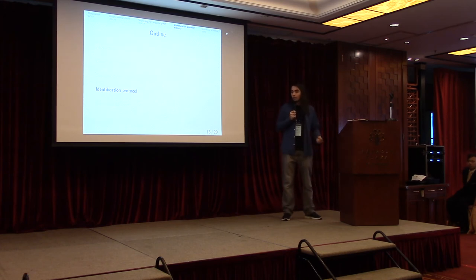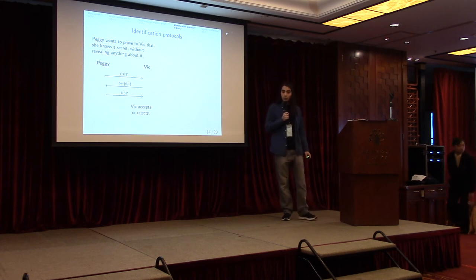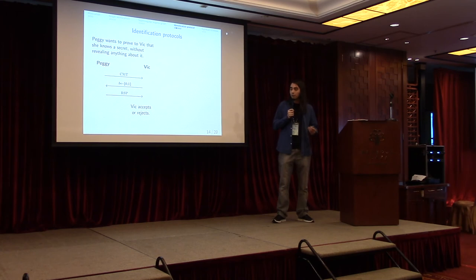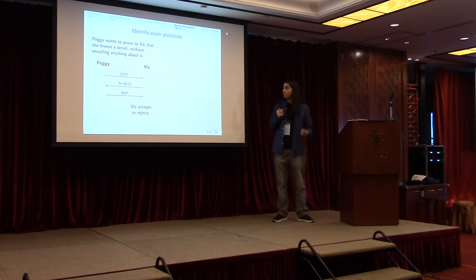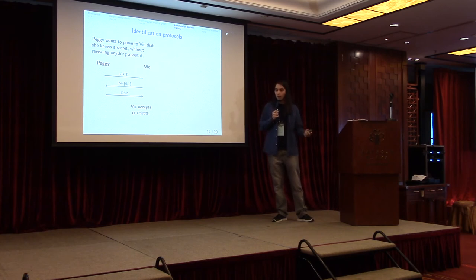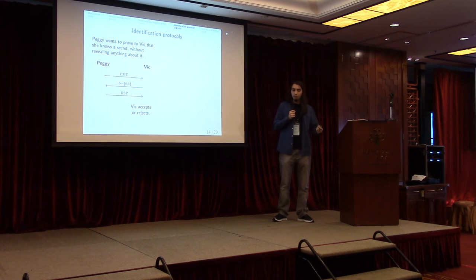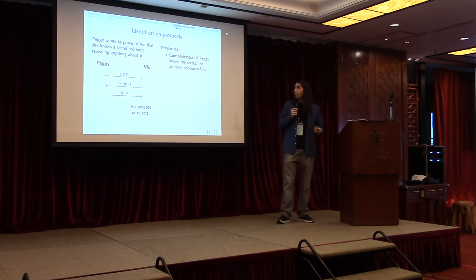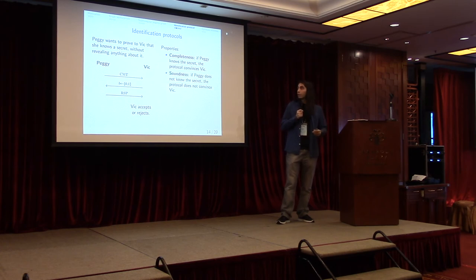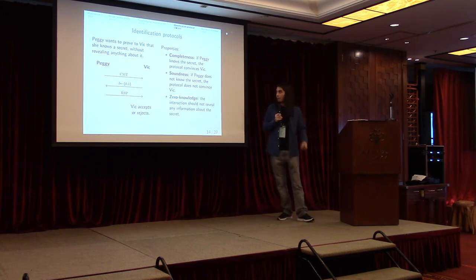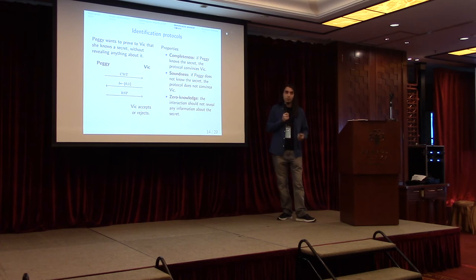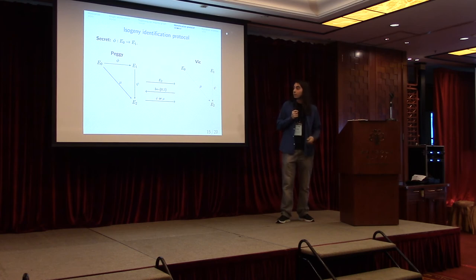So we now have all the elements we need to build our identification protocol. Just to recall the very formal definition of what an identification protocol is - you might have seen this as a sigma protocol or zero knowledge proof of knowledge. Essentially we have two parties as before, Peggy and Vic, and they will interact in a certain way. Peggy will want to prove to Vic that she knows the secret without revealing the secret. We want three properties from this. We want completeness: if she knows the secret she should be able to convince Vic. Soundness: if she doesn't know the secret she shouldn't be able to cheat, she shouldn't be able to produce a valid proof. And finally, zero knowledge property, which means that this interaction reveals nothing about the secret itself.